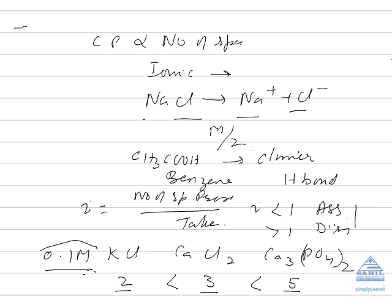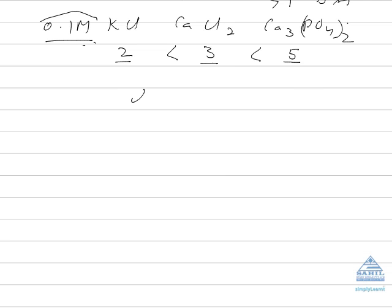Due to this reason, you can get the question: which of the following will show maximum deviation? Then the answer will be calcium phosphate because the number of species are more. He can also ask you what is the degree of dissociation.